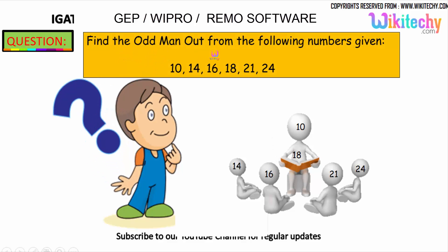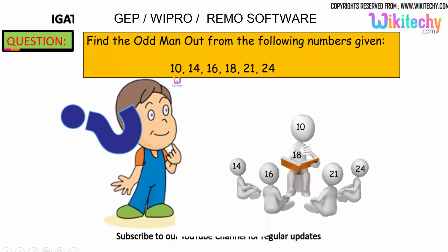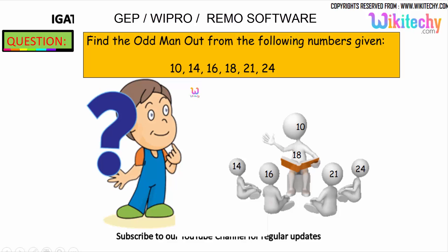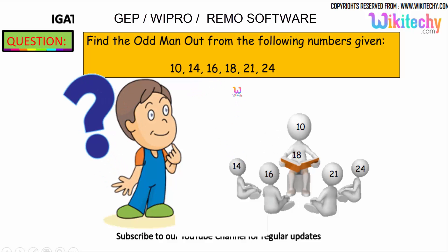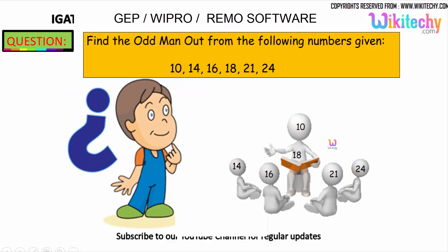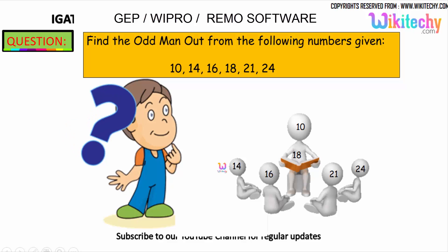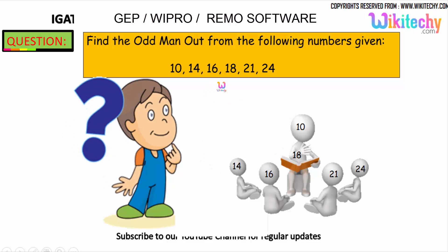Find the odd man out from the following numbers: 10, 14, 16, 18, 21, 24. Which one is the odd one?